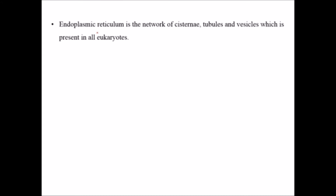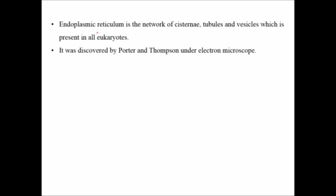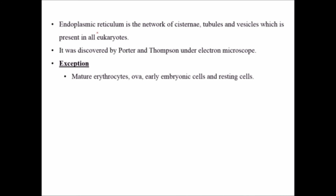Endoplasmic reticulum is the network of crystallite tubes and vesicles which is present in all eukaryotes, and it was first discovered by Porter and Thompson under electron microscope. It is present in all eukaryotes but there are certain exceptions, like in mature erythrocytes or RBCs, or early embryonic cells and resting cells, which don't have endoplasmic reticulum because there is no requirement for it in these cells.